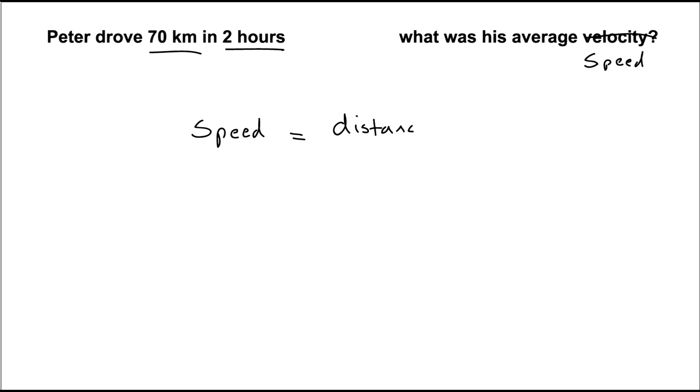Okay, let's clear that up and go back to the original question. Right, here we go. So Peter drove 70 kilometers in two hours to the north. What was his average velocity?